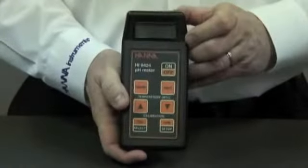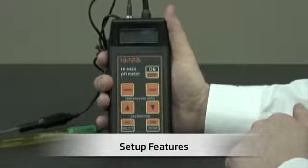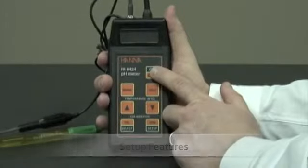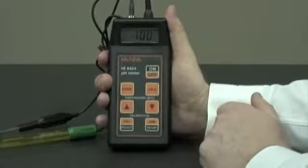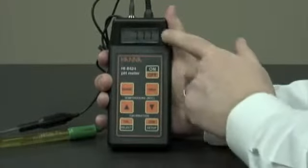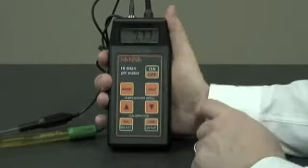Now we'll hook up the probes and turn the meter on. Now we've inserted the probes and we'll turn the meter on. Immediately, you'll see the battery percentage level, and now the display is showing pH.